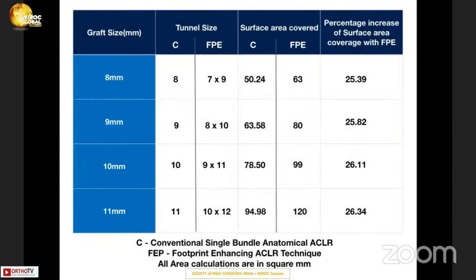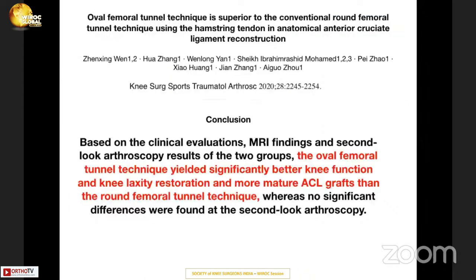How much increase in surface area can be expected? It's a simple mathematical calculation: using a 9 mm circular diameter gives 63% footprint coverage, but converting the same 9 mm graft to an 8×10 mm rectangular tunnel increases the area to 80% — essentially a 25% increase in footprint coverage on both the tibial and femoral sides.